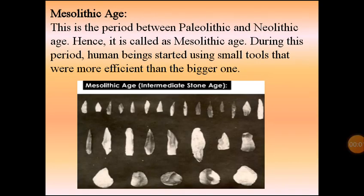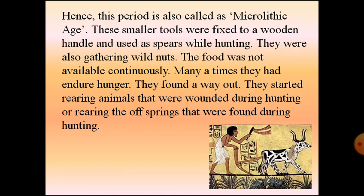The Mesolithic age is the period between Paleolithic and Neolithic age, hence it is called Mesolithic age. During this period, human beings started using small tools that were more efficient than the bigger ones. Before, people used big barks of trees or big stones; but as the age passed, they learned to use smaller, sharpened tools. This period is also called the Microlithic age.